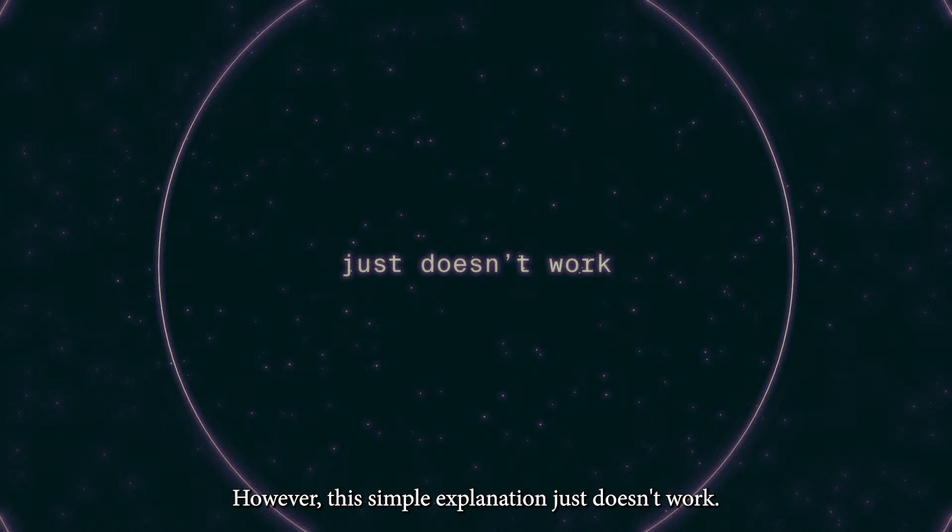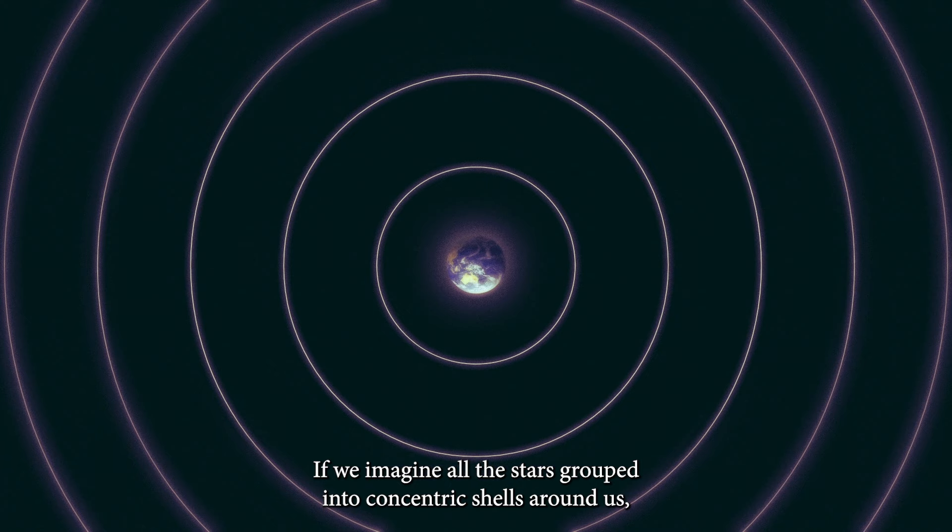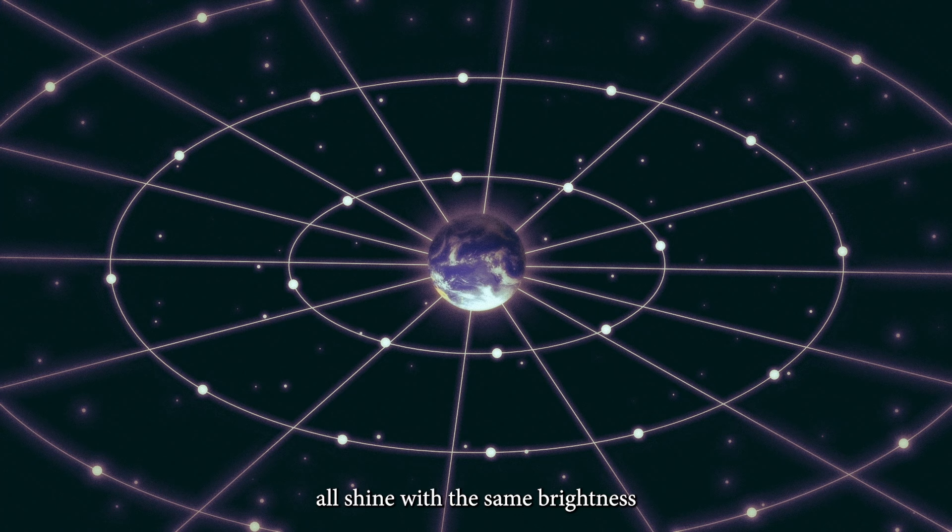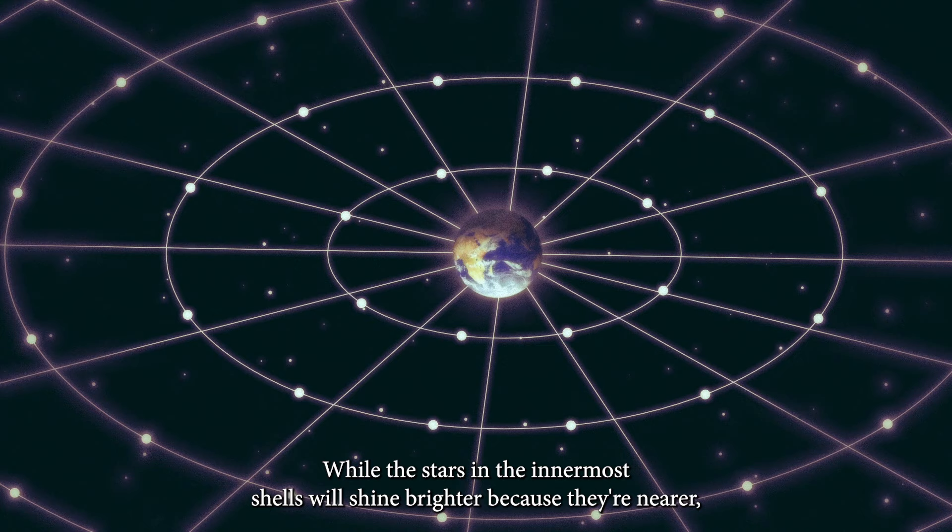However, this simple explanation just doesn't work. If we imagine all the stars grouped into concentric shells around us, like layers of an onion, extending out to infinity, and assuming that all the stars on any given shell all shine with the same brightness and are all equally spaced throughout the universe,